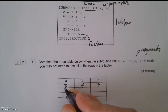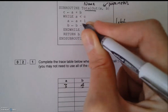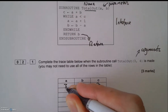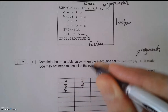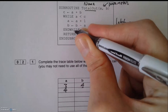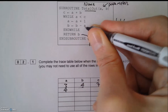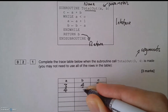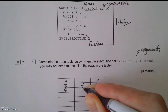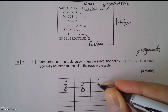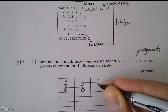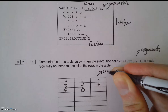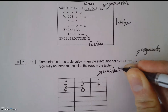While a is less than c — yes it is currently. So a equals a plus 1, that's now 4. Then b equals b minus a: 4 take away 4 is 0. Notice c is not going to change — that is something called a constant, so c stays at 7.